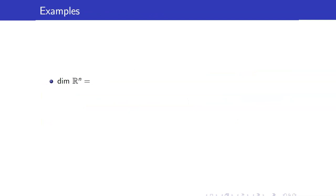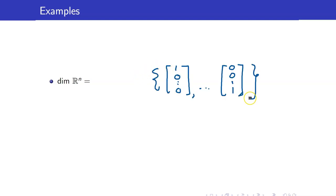Let us take a look at some examples. What would be the dimension of R^n? R^n has a standard basis consisting of the following vectors. Therefore, the dimension of R^n is equal to n.